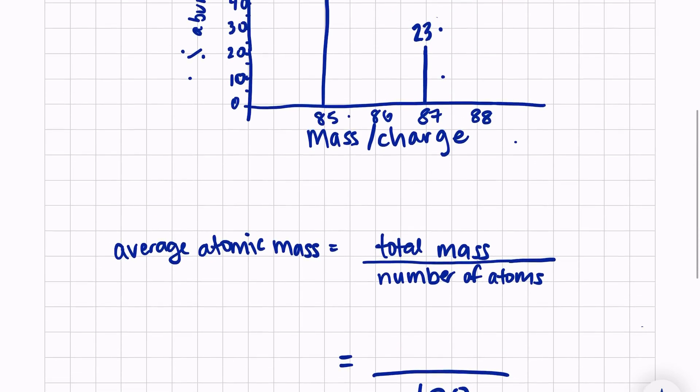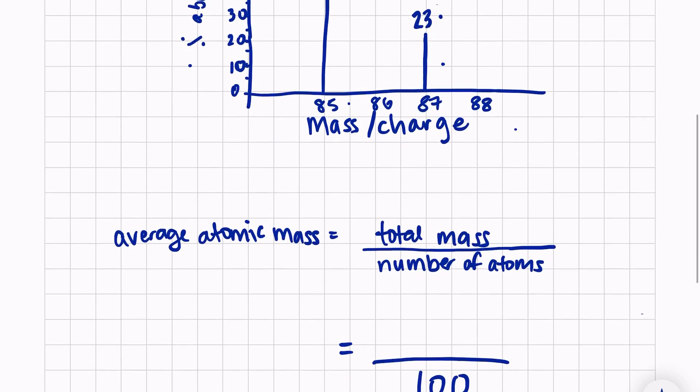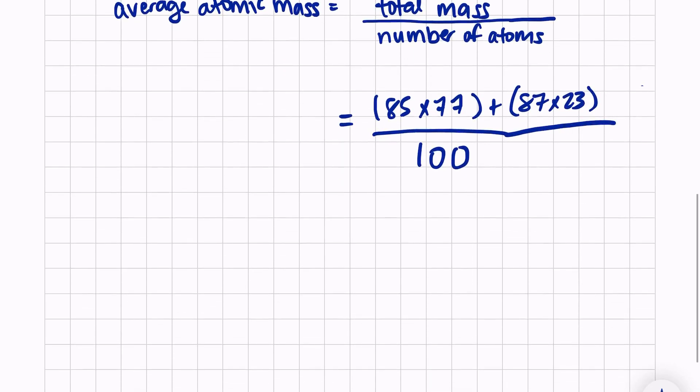So I have total mass. I have my mass of 85 that has 77 abundance, plus I have my mass of 87 that has 23 abundance, which is equal to 8,546 over 100.